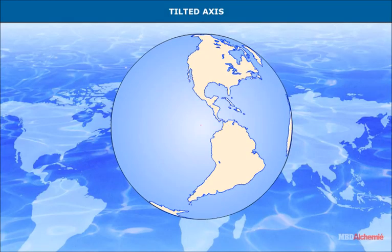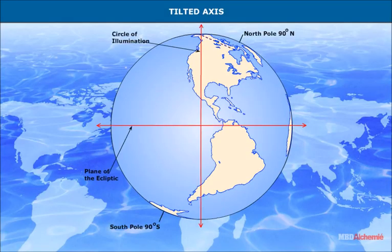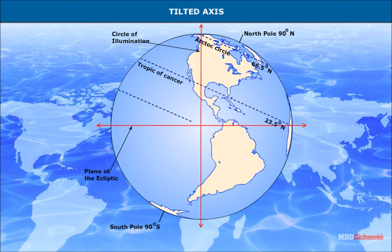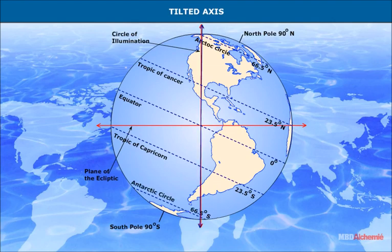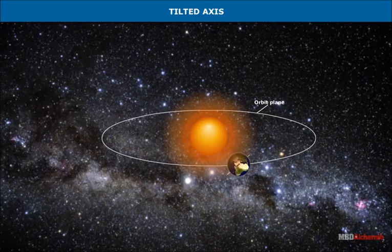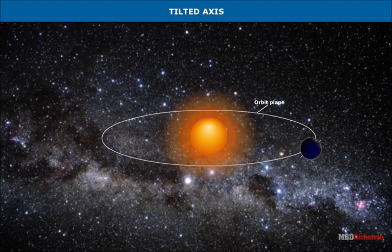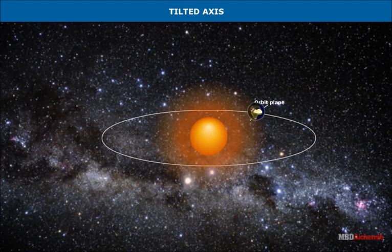Tilted axis: the globe rests on its frame in a slanting position, not perpendicular. This is exactly how the earth is positioned in space. It is tilted at an angle of 23 and a half degrees with the perpendicular to the plane of the earth's orbit.